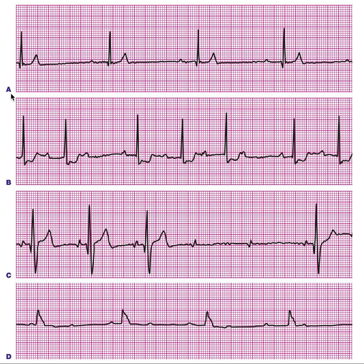One helpful memory tip: we often get confused between Type 1 and Type 2. Remember — in Type 1, the block is at the AV node, so the PR interval progressively prolongs, like a wave pushing against a solid wall with each beat. In Type 2, the block is below the AV node, which is why the PR interval stays constant. That is your clue to distinguish these two types.